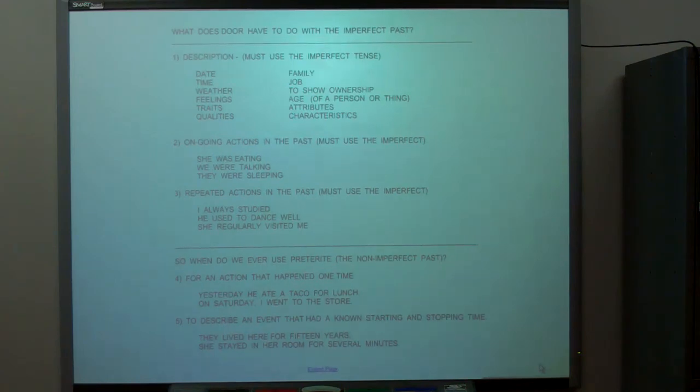So there are two types of past tense. Now, the one we've been using has been called preterite. It ended in one letter, like if it ends with an E, it was done by me. If it ends in an O, it was done by Joe.